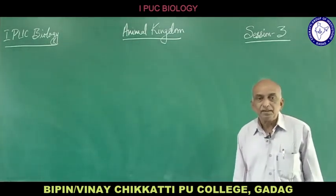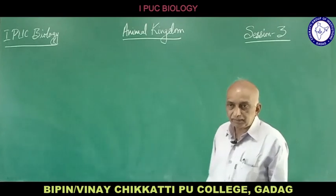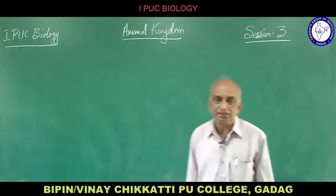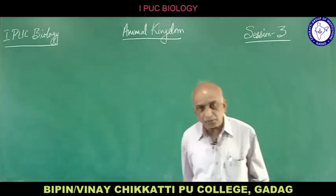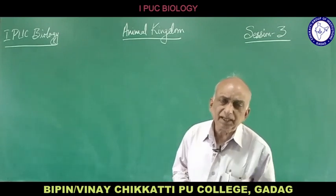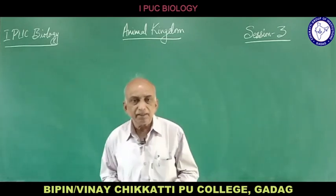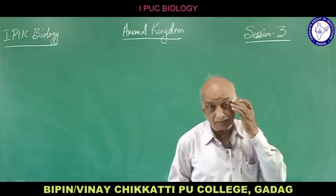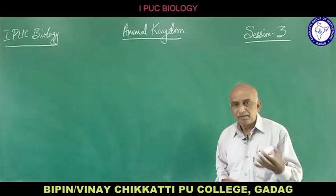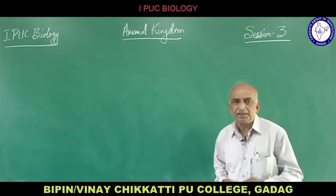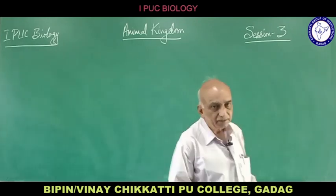In phylum Annelida, the earthworm is the example. The important character is metameric segmentation — the body is segmented, with true segmentation both externally and internally. Specific characters include parapodia and setae as organs of locomotion, and nephridia as organs of excretion. Earthworm and leech are examples, as is Nereis, also called the clam worm.